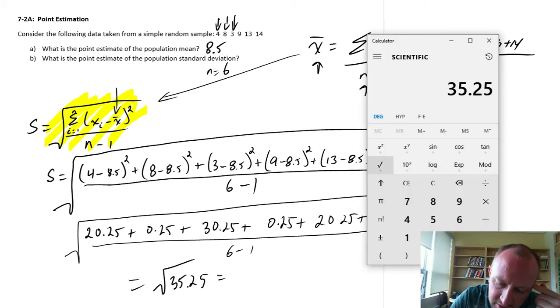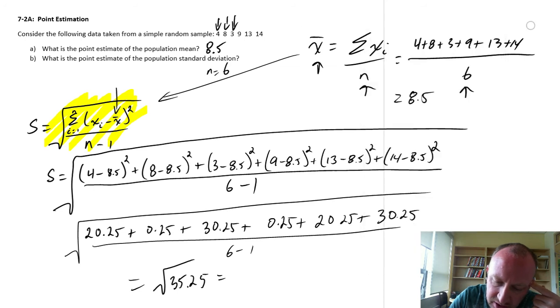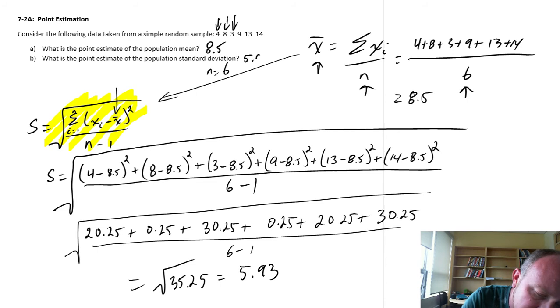And now we take the square root. And that's 5.93. So there's our final answer, 5.93.